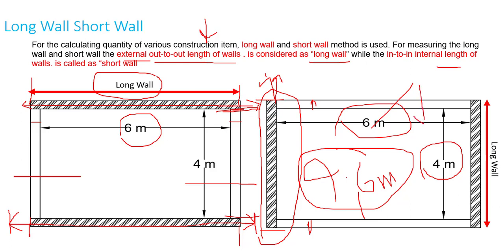Hope you understand now what is a short wall and what is a long wall. Again, if you take any wall as an out to out dimension, that will be considered as the long wall, and if you take an in to in dimension of any wall, that will be considered as the short wall.